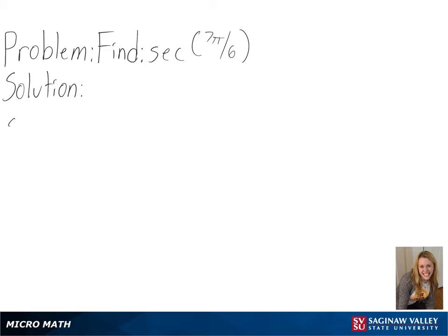Our problem is to find secant of 7 pi over 6. To solve this, we will be using a unit circle.